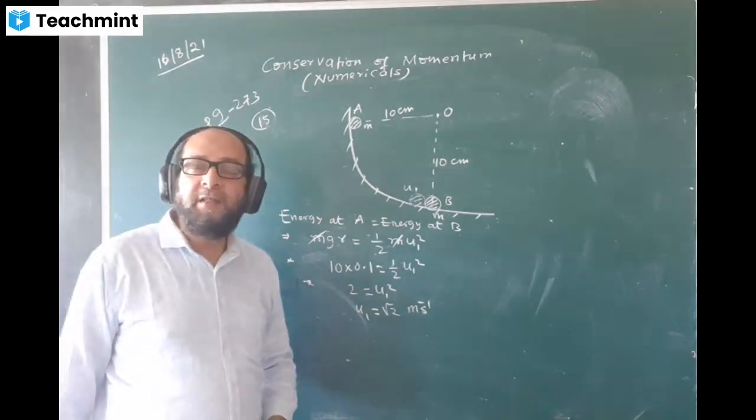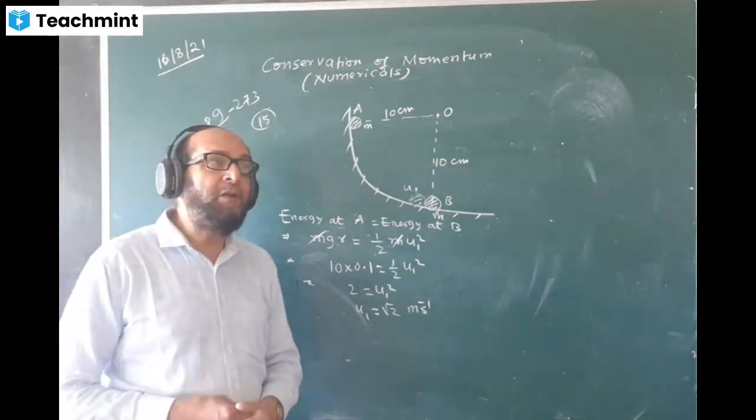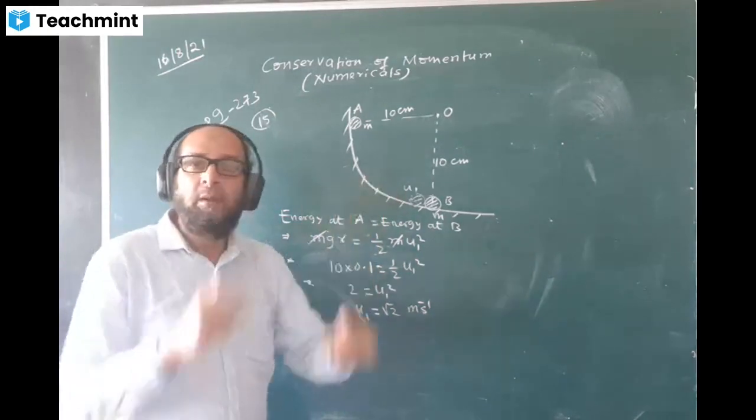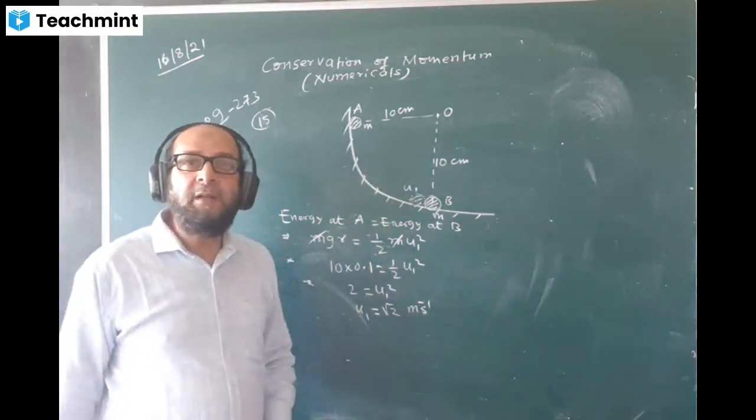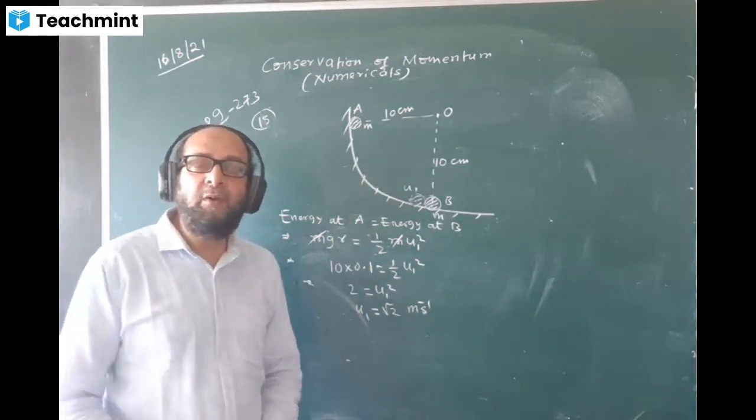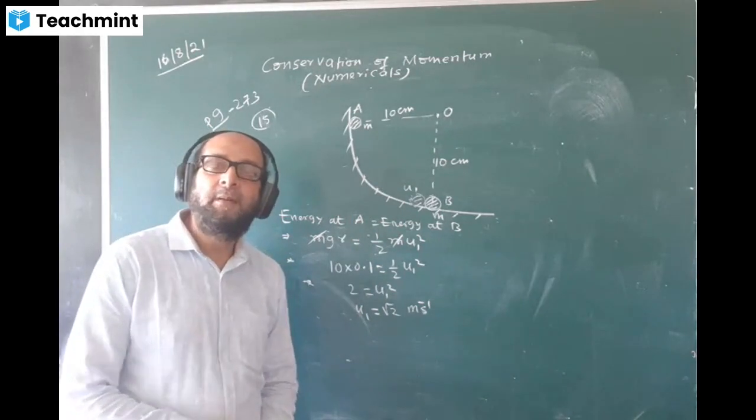And you know the fact - in perfectly elastic collision when the masses are equal and they collide with one another, what happens to their velocities after collision? Tell me, what will happen?